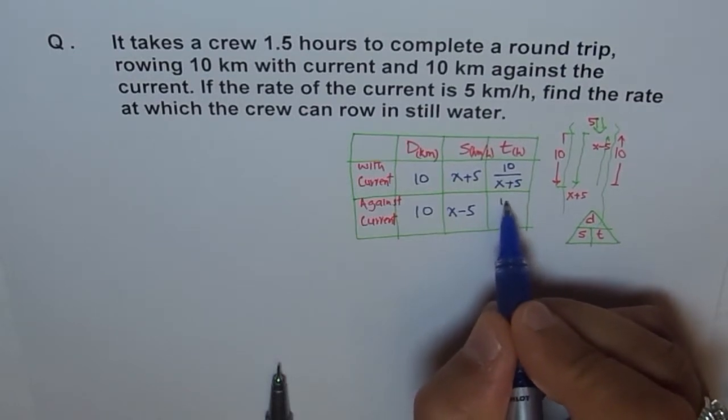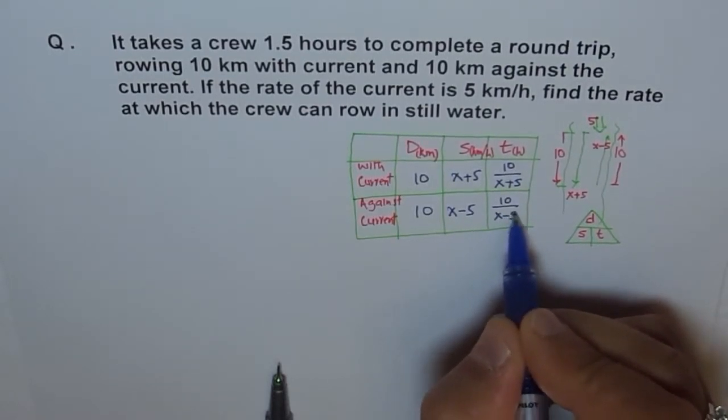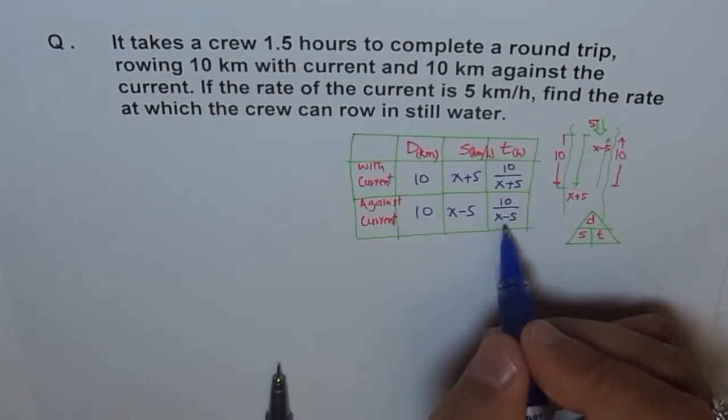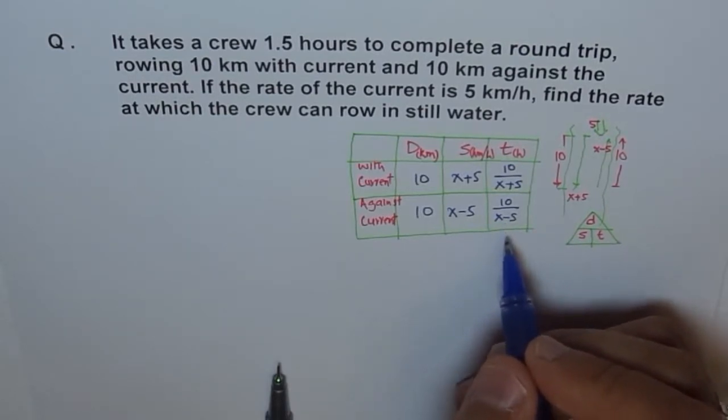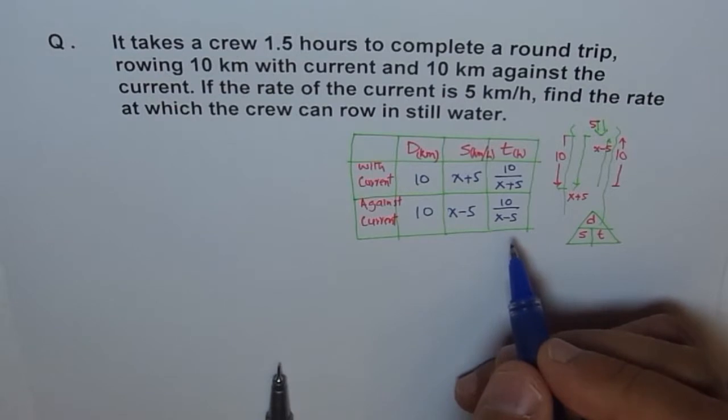Now, here, it will be 10 over X minus 5. Much longer because the denominator is smaller, right? So, that's how it is.